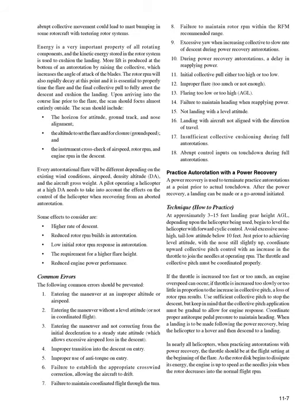Upon arriving on the course line prior to the flare, the scan should focus almost entirely outside: the horizon for attitude, ground track, and nose alignment; the altitude to set the flare; closure/ground speed; and the instrument cross-check of airspeed, rotor RPM, and engine RPM in the descent. Every autorotational flare will be different depending on existing wind conditions, airspeed, density altitude (DA), and aircraft gross weight. A pilot operating a helicopter at high DA needs to account for higher rate of descent, reduced rotor RPM build, low initial rotor RPM response, the requirement for a higher flare height, and reduced engine power performance.